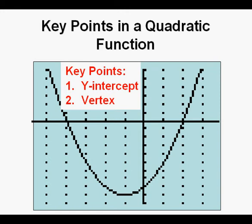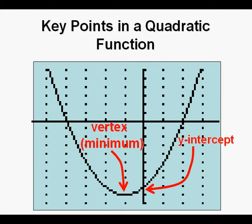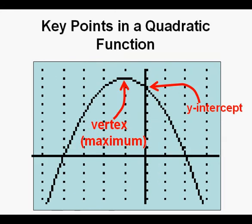Every quadratic function has two key points: a y-intercept and a vertex. Here's the y-intercept where the function crosses the y-axis, and here's the vertex, which in this case is the bottom or minimum point or value of the function. This is how these two points appear on an upward opening parabola. And here are the vertex or maximum and the y-intercept of a downward opening parabola.